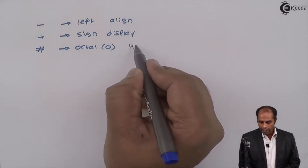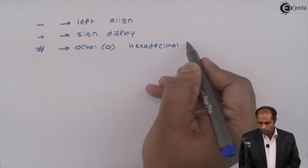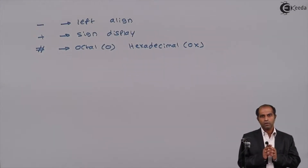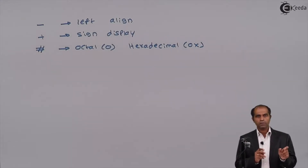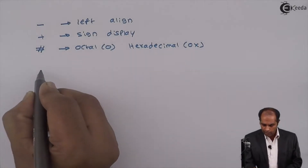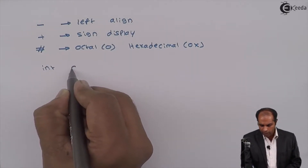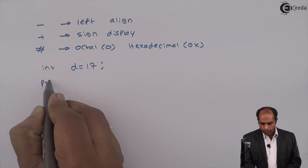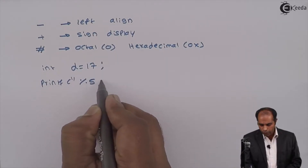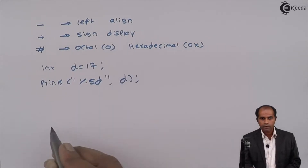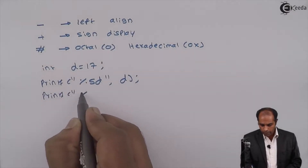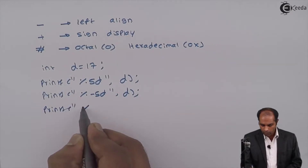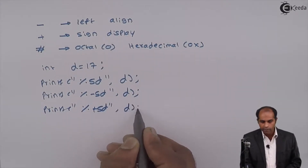The hash flag displays octal numbers with zero and hexadecimal numbers with the zero-x specifier. The description might not be sufficient, so let's illustrate these flags with an example. I'll take some outputs with formatted specifiers and then the same output with flags. Assume I have an integer variable d equal to 17. We'll use: printf("%5d", d), printf("%-5d", d), and printf("%+5d", d).